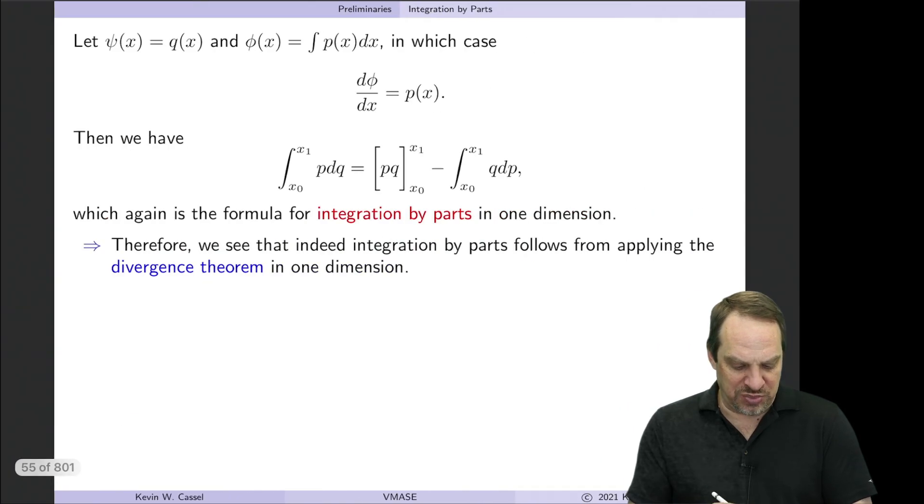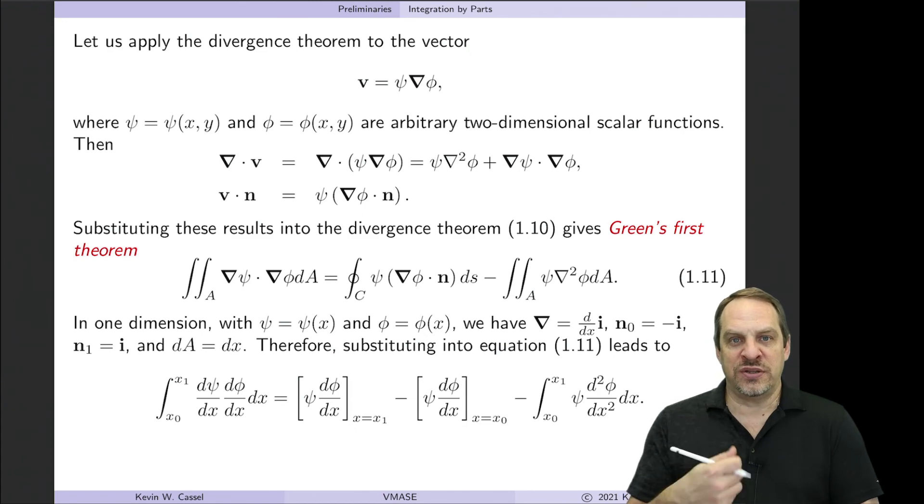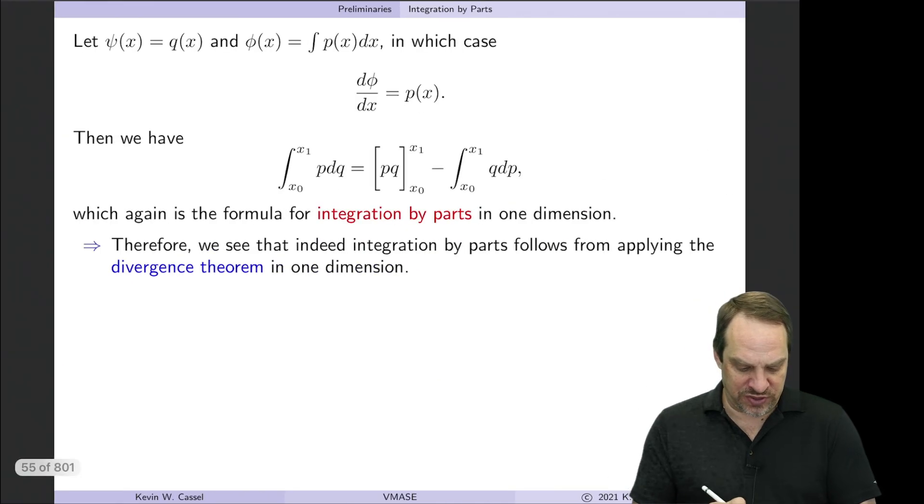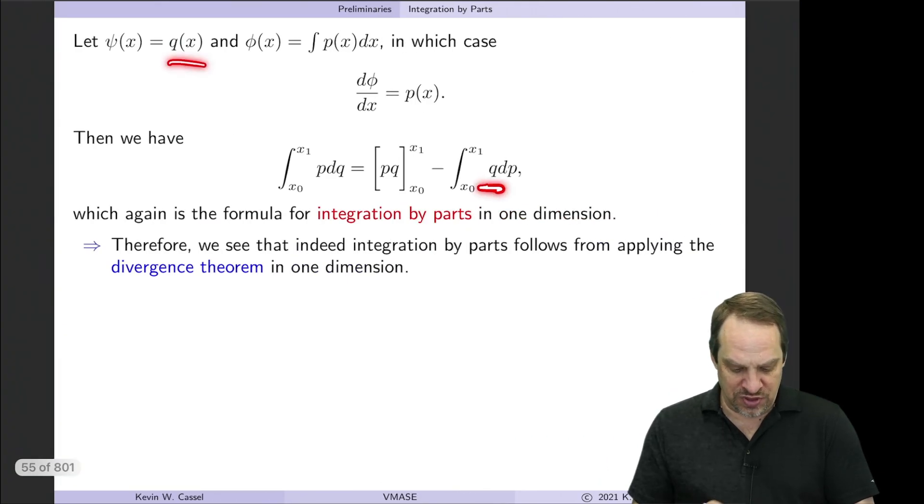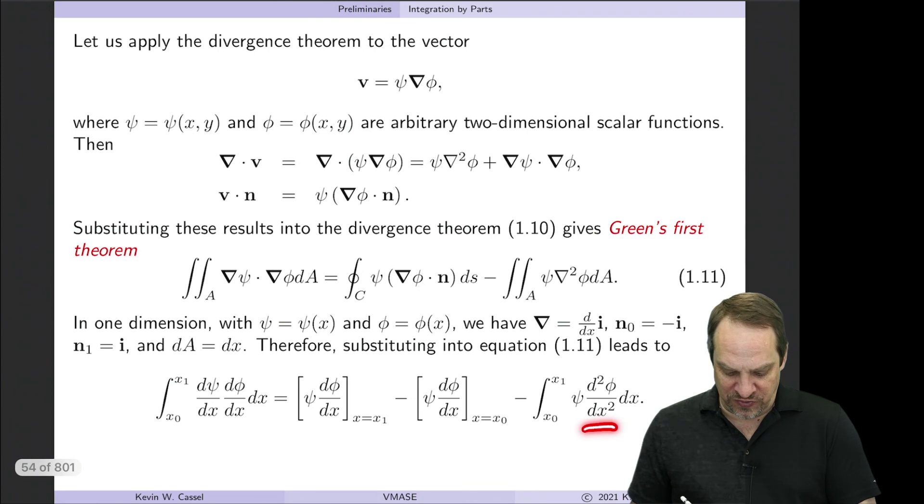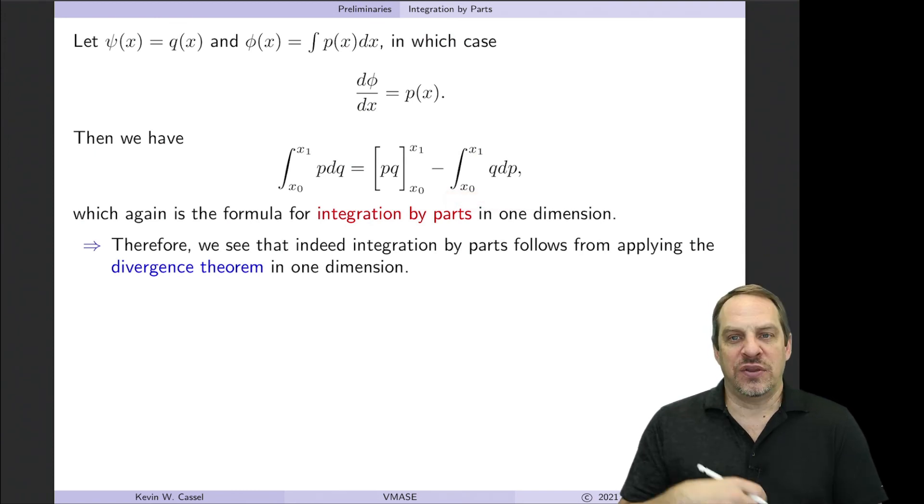So this first term becomes the integral of p dq. These two terms together are the p times the q evaluated at the endpoints. So p times q evaluated at the endpoints. And then finally, this one minus the integral of ψ, well, ψ is just q. And d²φ/dx² well, that would just be dp/dx. So that's minus the integral of q dp. Therefore we see that the one-dimensional application of the divergence theorem does indeed result in the integration by parts formula.